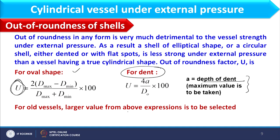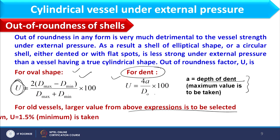For older vessels, the larger value from either out-of-roundness expression should be selected for design. For new vessels where out of roundness is not occurring due to dents, the value of U should be taken as 1.5%. Out of roundness is expressed as a percentage.